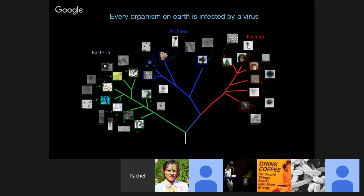This isn't unique to microorganisms. Every organism on Earth is infected by a virus — you're infected by viruses, I'm infected by viruses. Understanding the interaction between the core genome, which we've studied for a long time, and this variable genome is something we have to think about in general in terms of population biology.